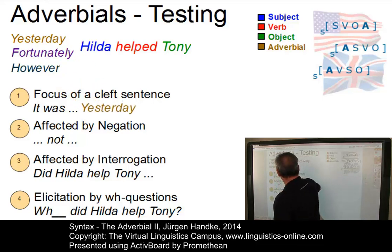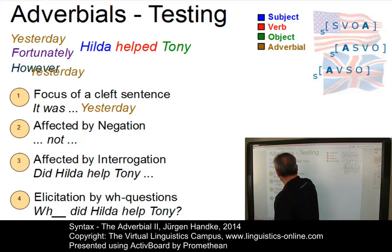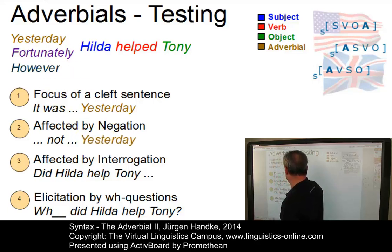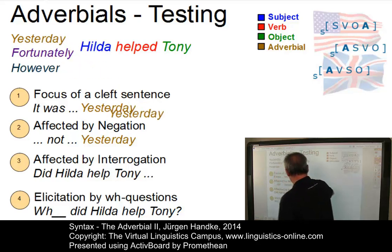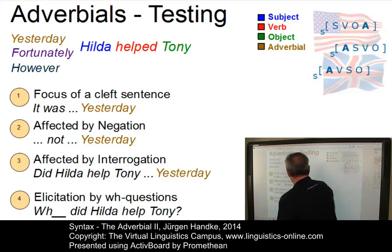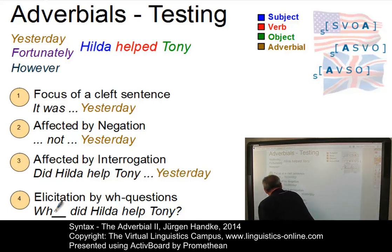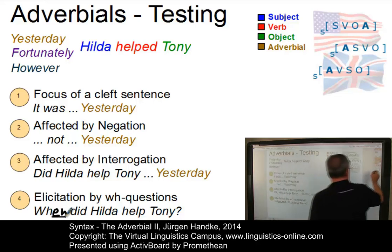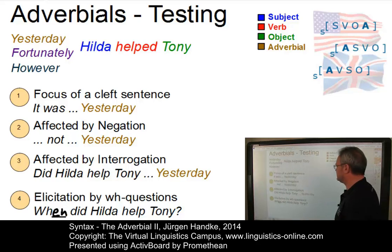'It was yesterday that Hilda helped Tony.' 'Not yesterday, but tomorrow' or 'not yesterday, but two weeks ago.' 'Did Hilda help Tony yesterday?' Yes, that is possible. And of course we have the WH elicitation element: 'When did Hilda help Tony?' So yesterday passes all four criteria as an adjunct.